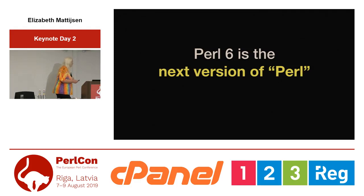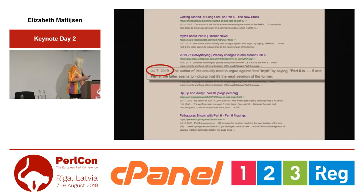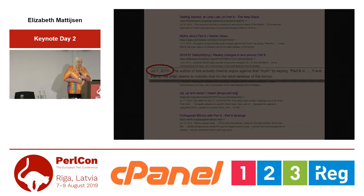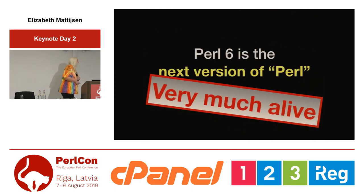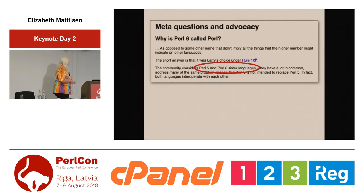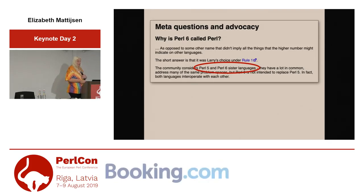The myth: Perl 6 is the next version of Perl — this appears to be very much alive. Even though in the documentation of Perl 6 we actually say that we're sister languages, everybody still thinks it is the next version.